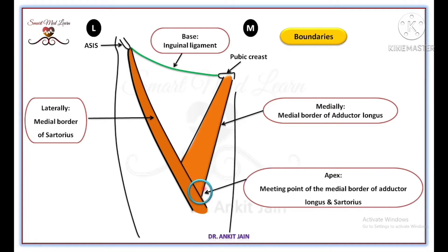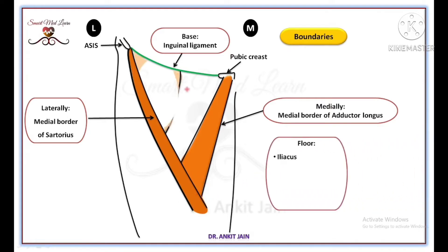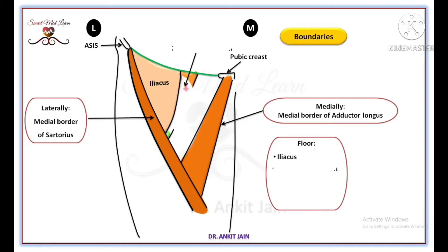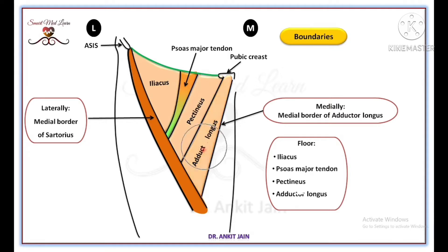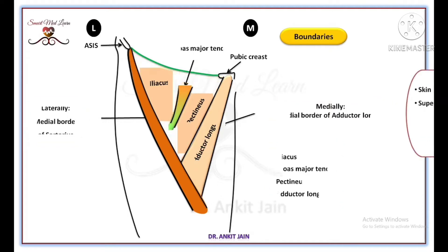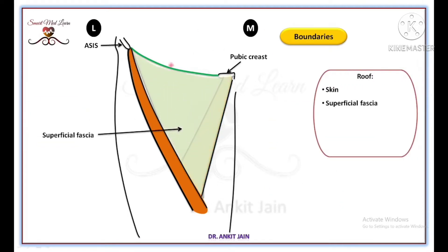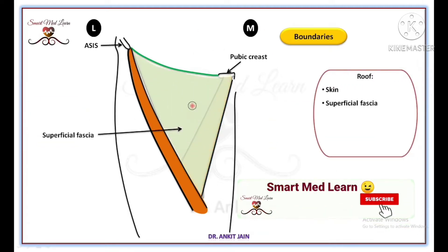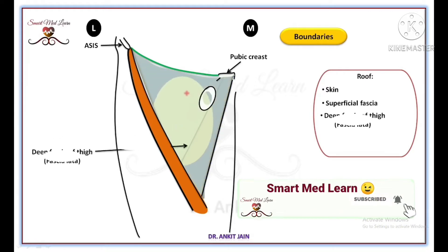The floor of the femoral triangle is muscular and is formed by the iliacus muscle, the tendon of psoas major muscle, pectineus muscle, and adductor longus muscle. The roof of the femoral triangle is formed by the skin, superficial fascia, and deep fascia of the thigh.